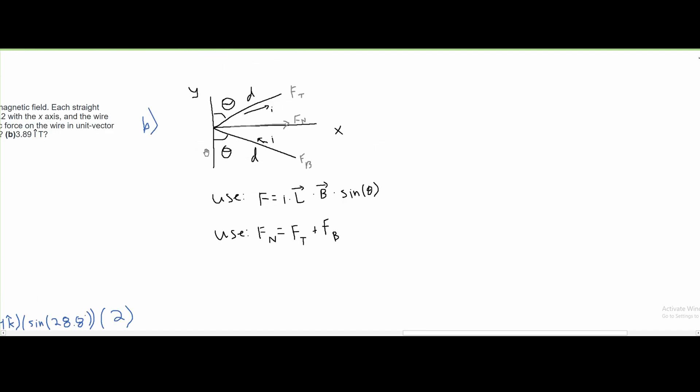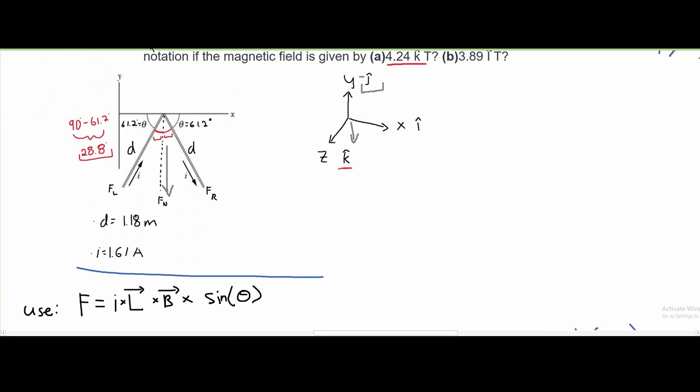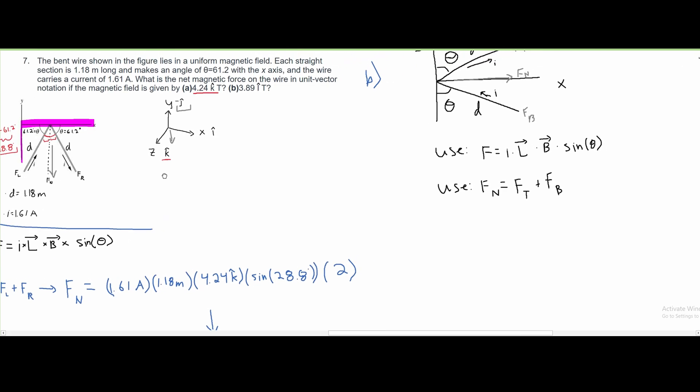But before we go any further, we can use symmetry to see that this is just zero. In part a, our values are in the negative part of the graph. If they're both in the same quadrant, they're added together.